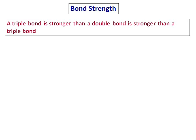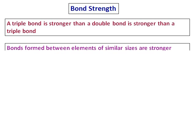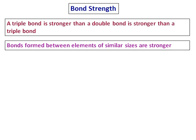For questions on bond strength, remember that a triple bond is stronger than a double bond, which is stronger than a single bond. Another key point is that bonds formed between elements of similar sizes are stronger.